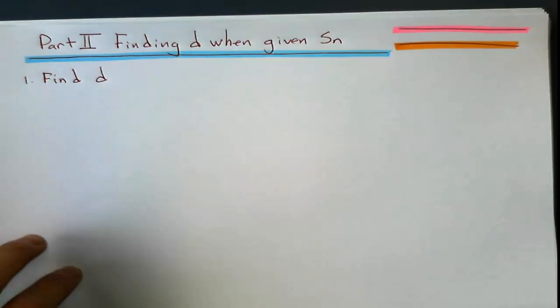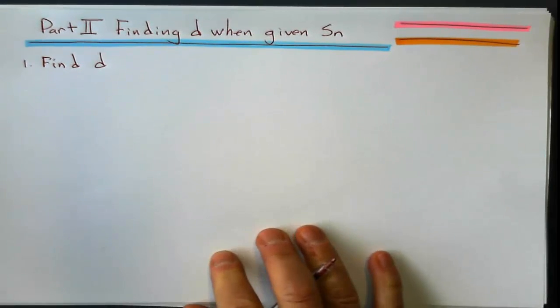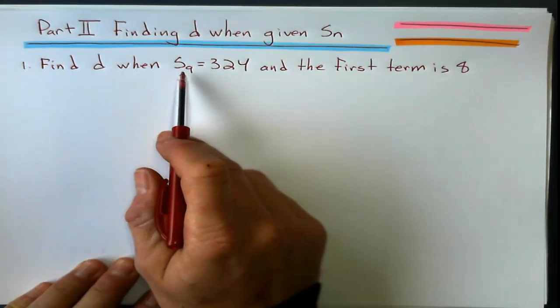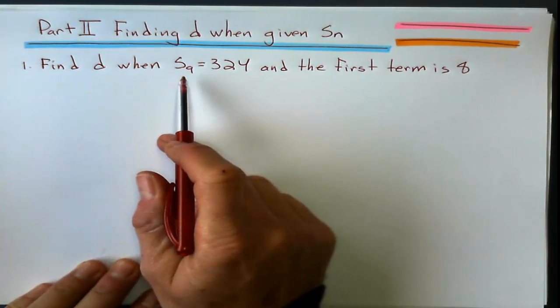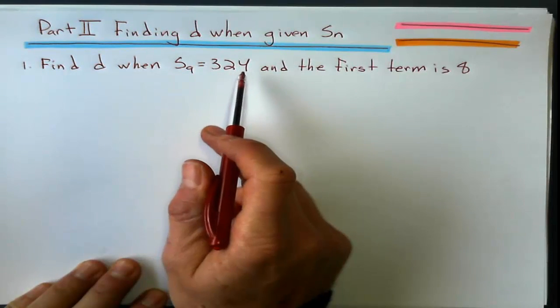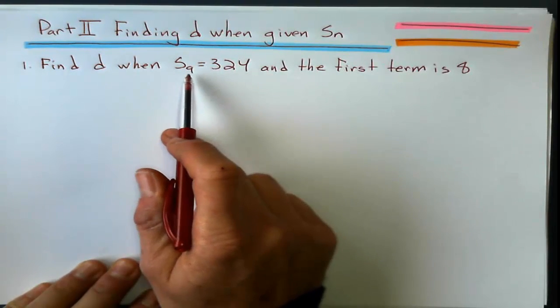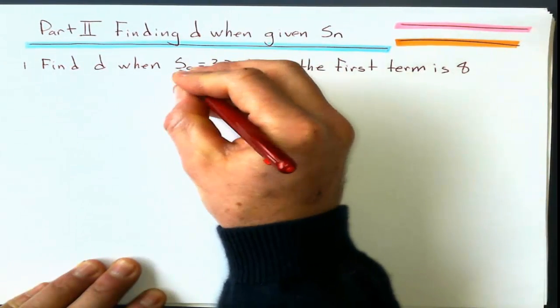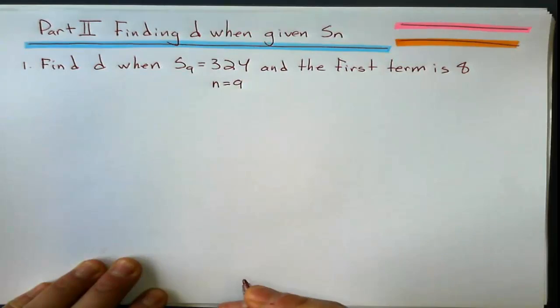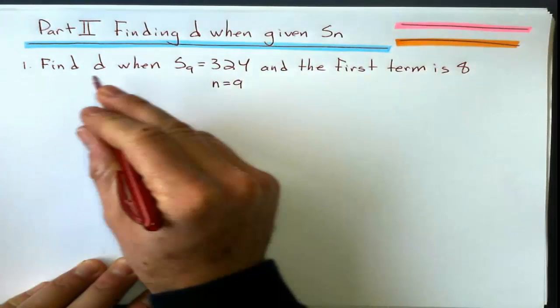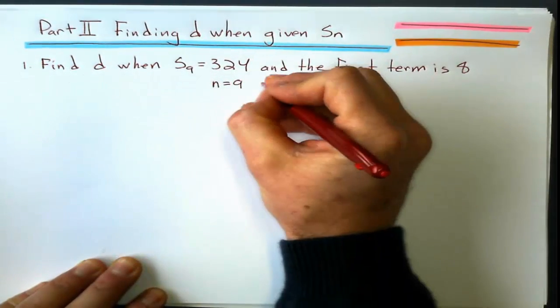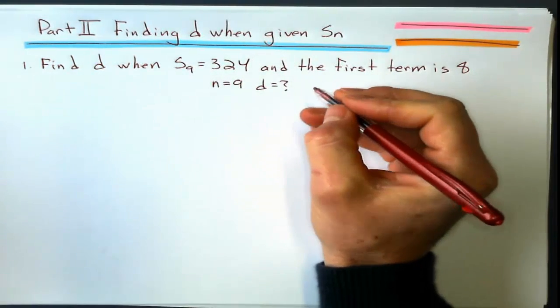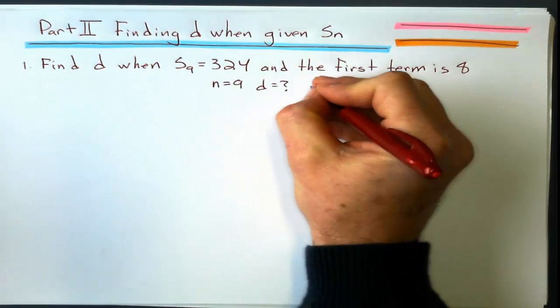Let's give an example here. Find the common difference. So, let's see if we can do this one. So S9 equals 324. What does that mean? It means the first 9 terms add up to 324. The first 9 terms. So right here, let's go, well, n equals 9. Common difference, I don't know that yet. That's what I'm trying to figure out. I don't know what that is yet. What else can I understand? A.